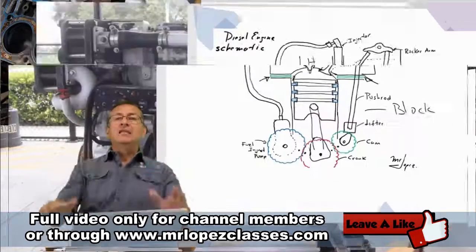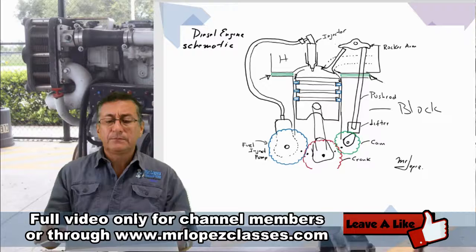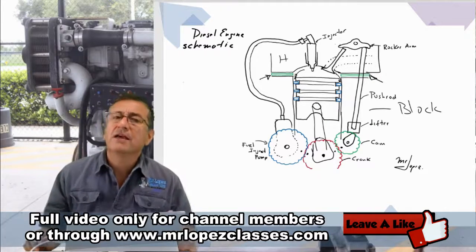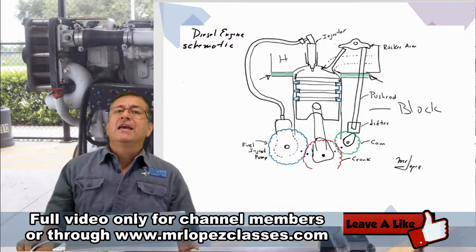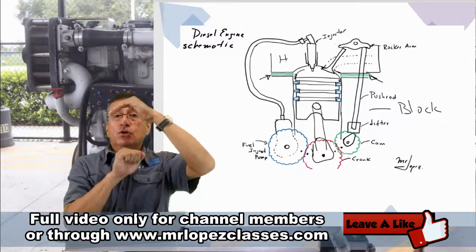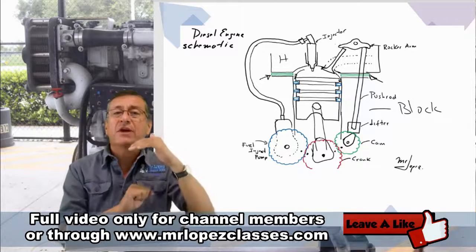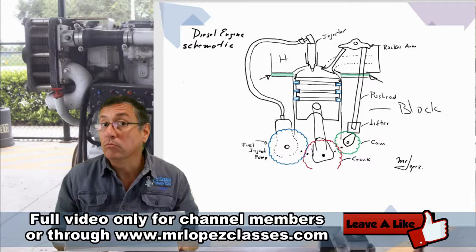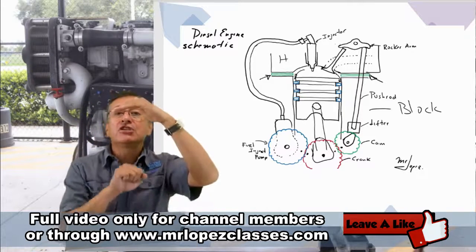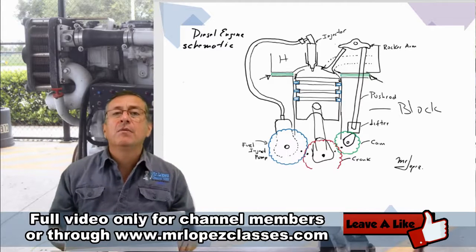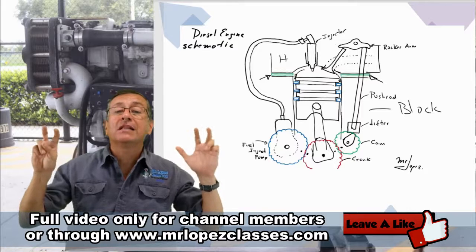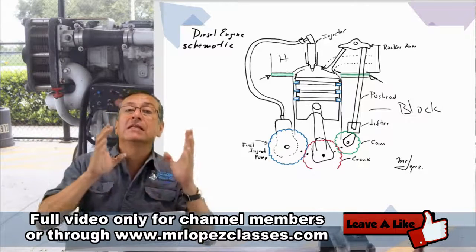We are going to talk later about that situation. The life of a diesel engine depends on the compression of the engine. Remember, if the compression is not good, when the piston is going up with the valves closed, the piston does not compress the air properly. When the piston reaches top dead center, probably the temperature and pressure are not appropriate in order to ignite the fuel.